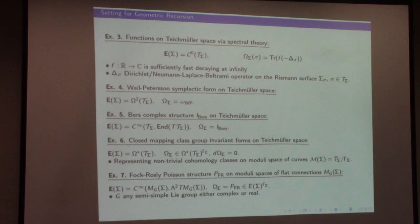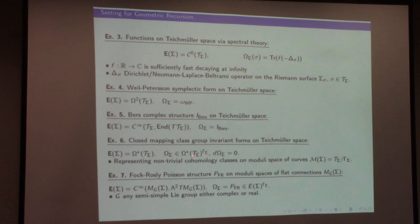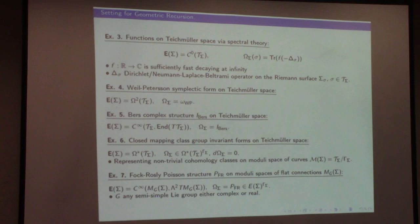Next: consider closed mapping class group invariant forms on Teichmüller space. The vector space I associate is all forms on Teichmüller space. The vector I have is some closed form which is mapping class group invariant. I'm particularly interested in forms that represent non-trivial cohomology classes on the moduli space of curves. We know constructions for all the stable cohomology of the moduli space, but very few constructions for odd-degree forms. Since these moduli spaces are of negative Euler characteristic, there's far more odd than even cohomology — so there's a lot to find.